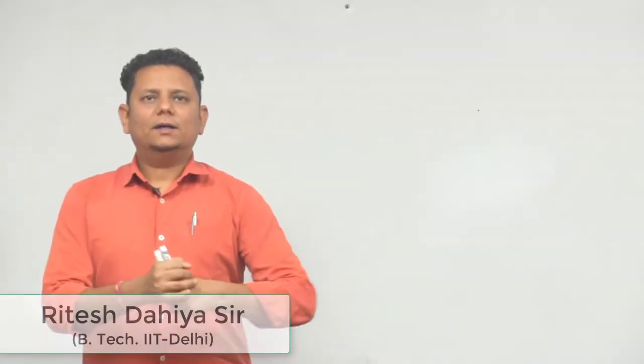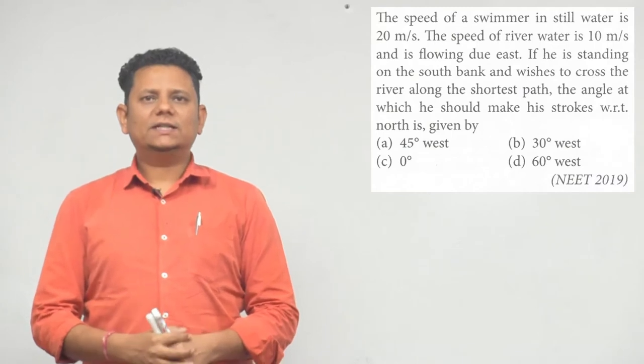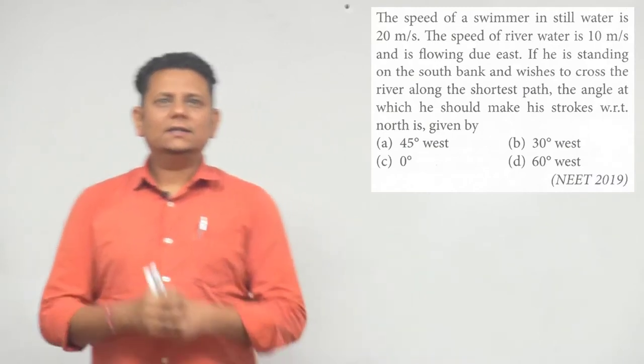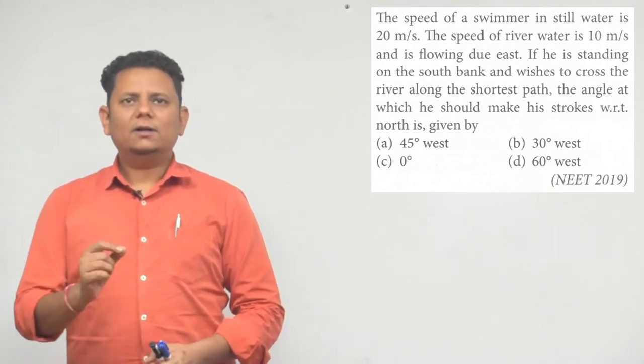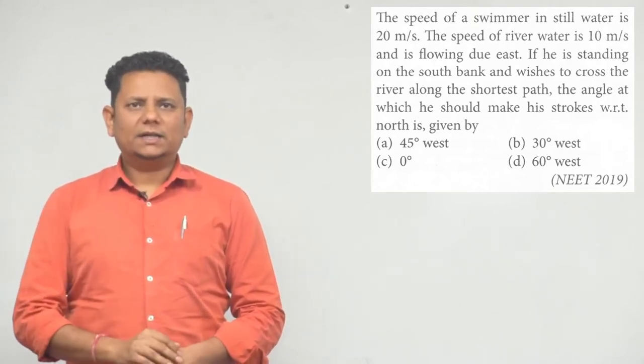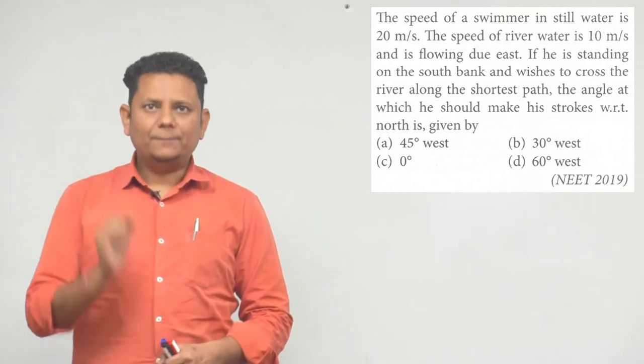Let's start the next question. This is from the NEET 2019 exam and it says the speed of a swimmer in still water is 20 meters per second. The speed of river water is 10 meters per second and is flowing due east.